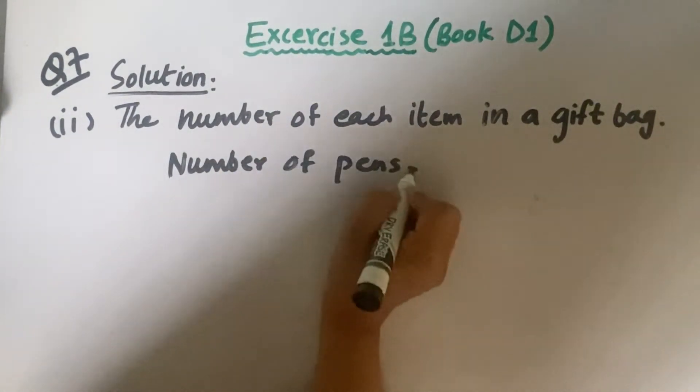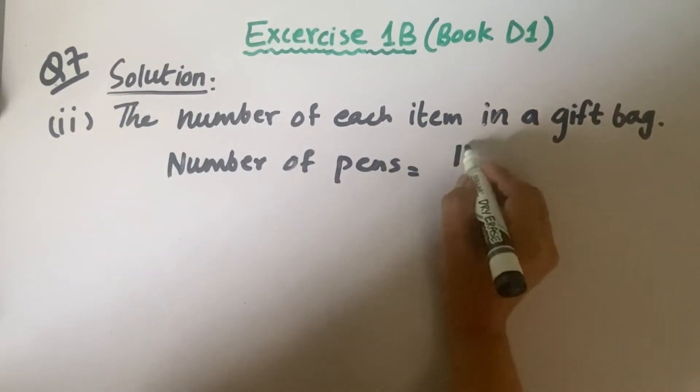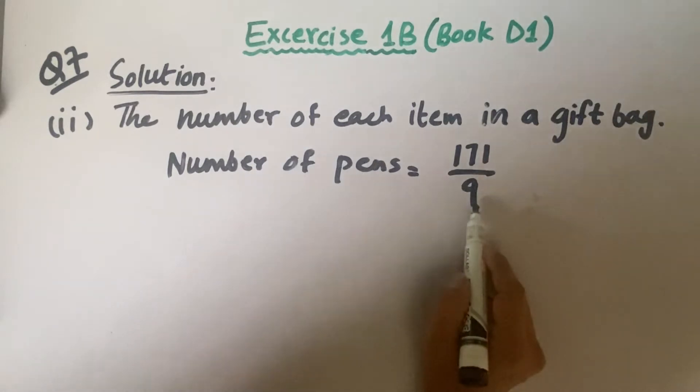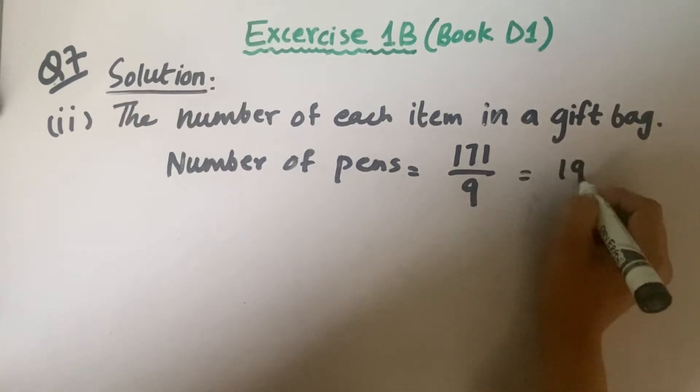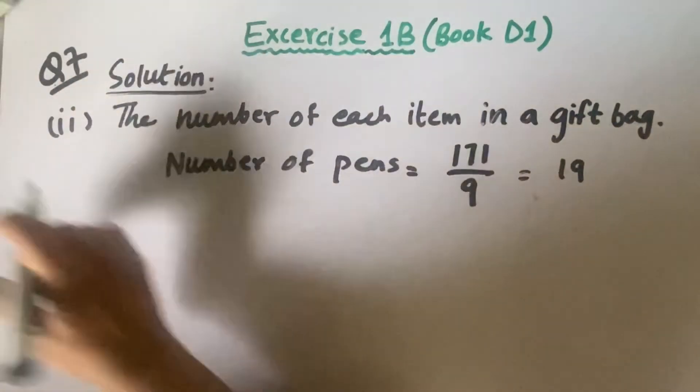For that, we are going to divide 171 by 9, because 9 is the highest common factor. We can completely divide it and we will get 19. It means that 19 pens are in each gift bag.